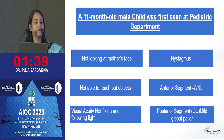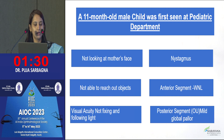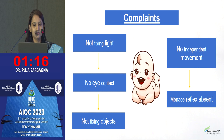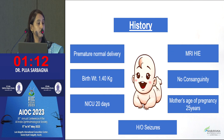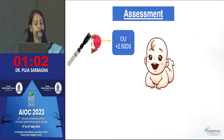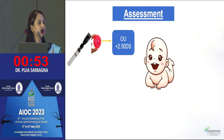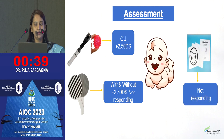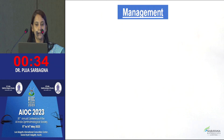To illustrate with a case: an 11-month-old male child first seen in the pediatric department. Complaints included not looking at the mother's face and not being able to reach objects. On examination — not fixing and following light, nystagmus, anterior segment within normal limits, posterior segment showed mild global pallor. Eye contact was absent, Menes was absent, and the child had no independent movement. History included prematurity, birth weight 1.4 kg, NICU for 20 days. MRI showed hypoxic-ischemic injury. On assessment with dynamic retinoscopy, the child was not responding on Lea Paddle with or without glasses, not responding on Hiding Heidi, and not responding to any gaze on the Lea Wand.